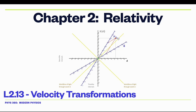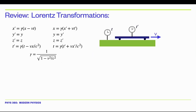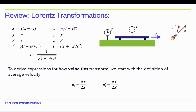Lecture 213: Velocity Transformations. We've spent several lectures looking at the Lorentz transformation, so here they are again. We want to now derive expressions for how velocities transform when we're in two different reference frames.